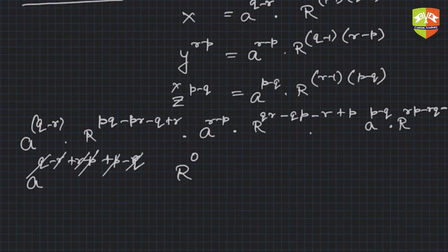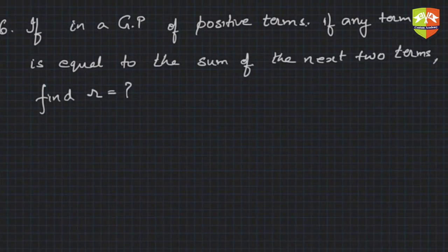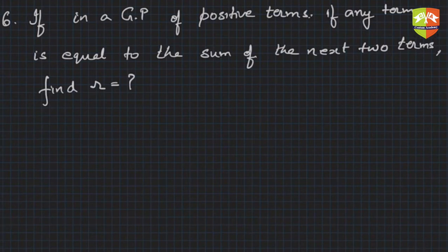So a to the power 0 times R to the power 0 equals 1. Next question: if in a GP of positive terms any term is equal to the sum of the next two terms, find r. So if any term is equal to the sum of the next two terms, that means a_n equals a_(n+1) plus a_(n+2).